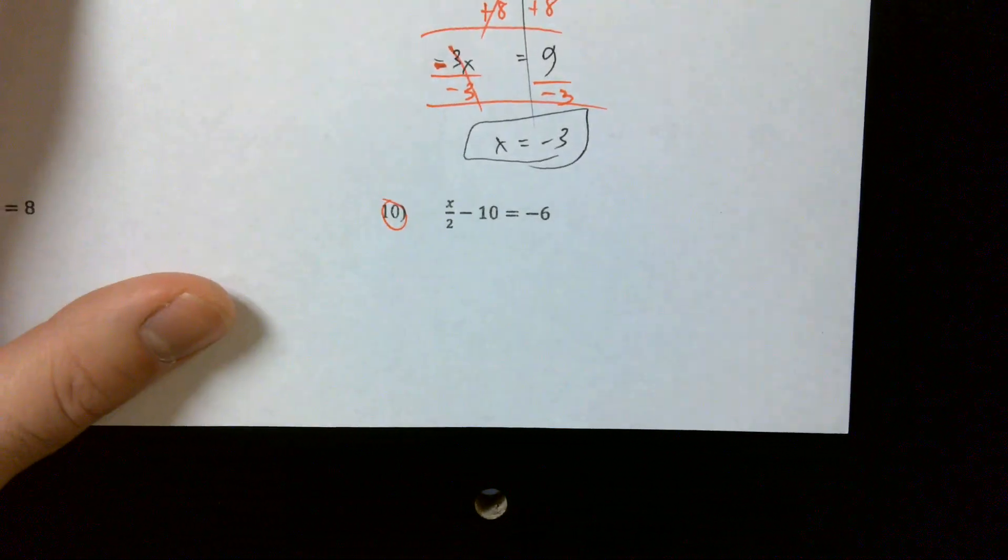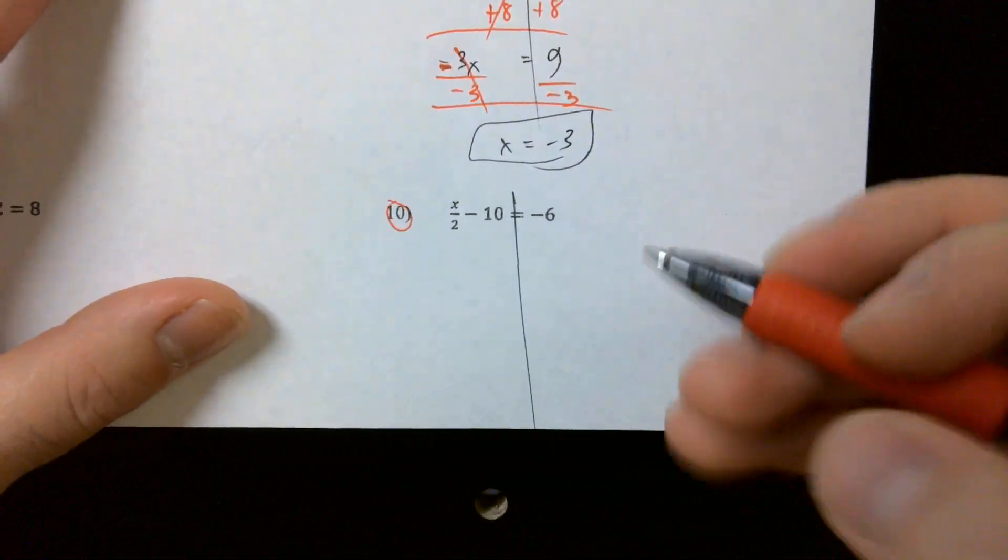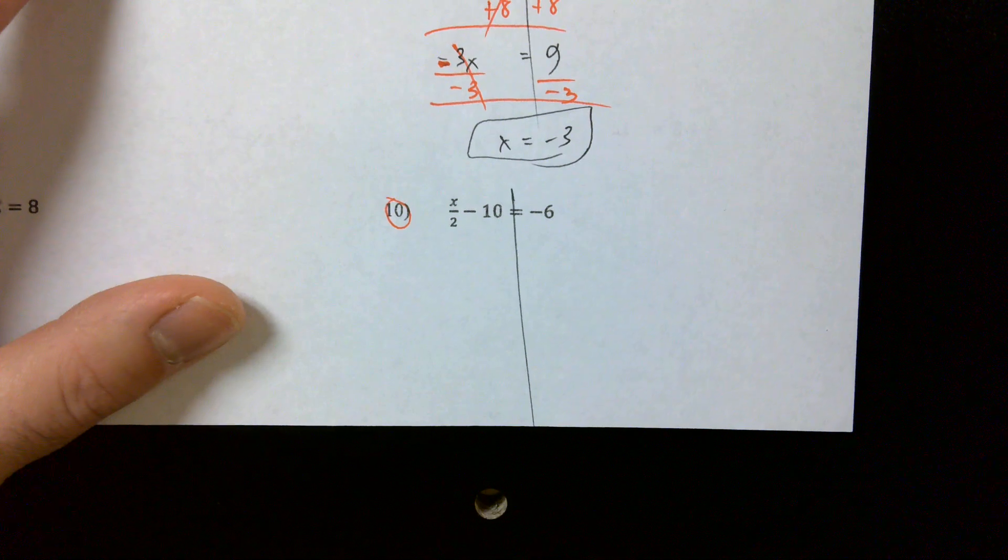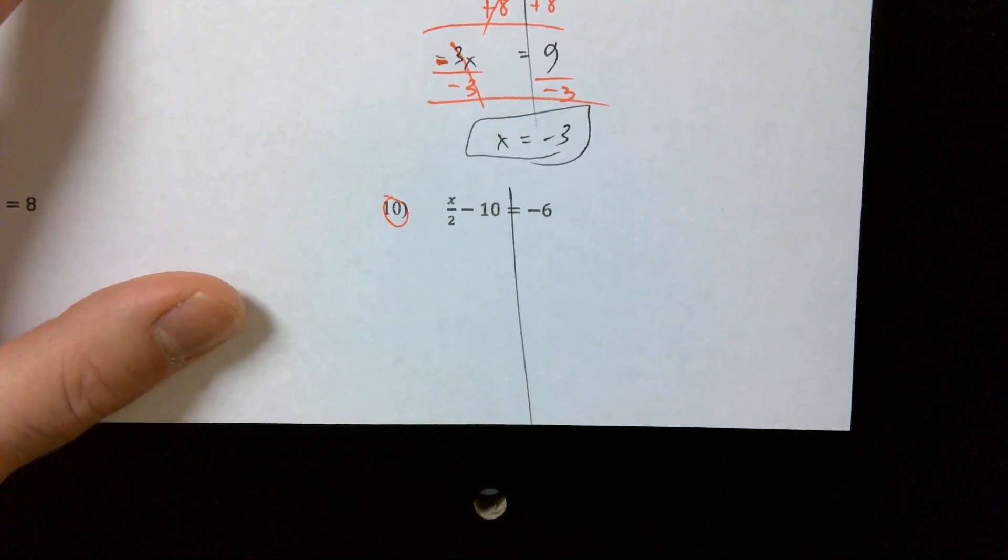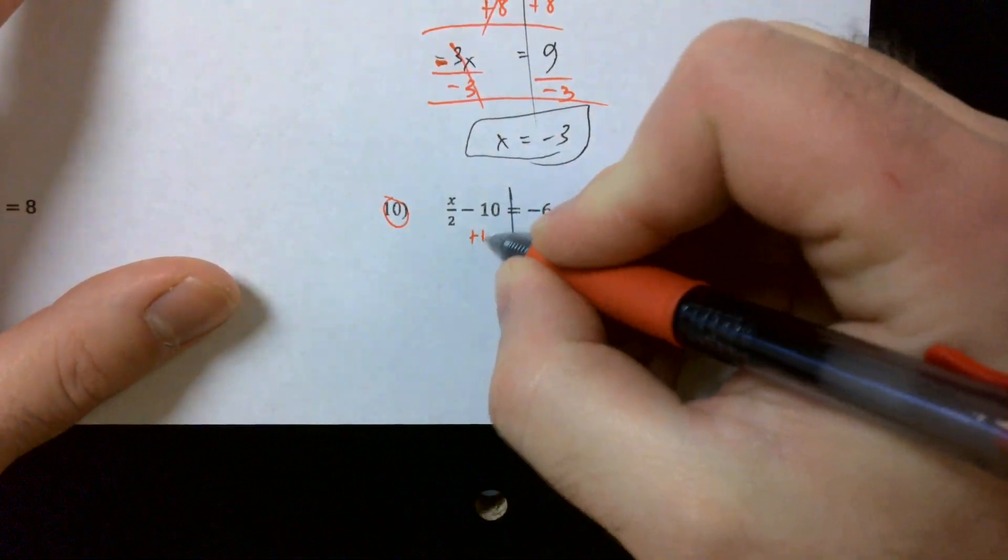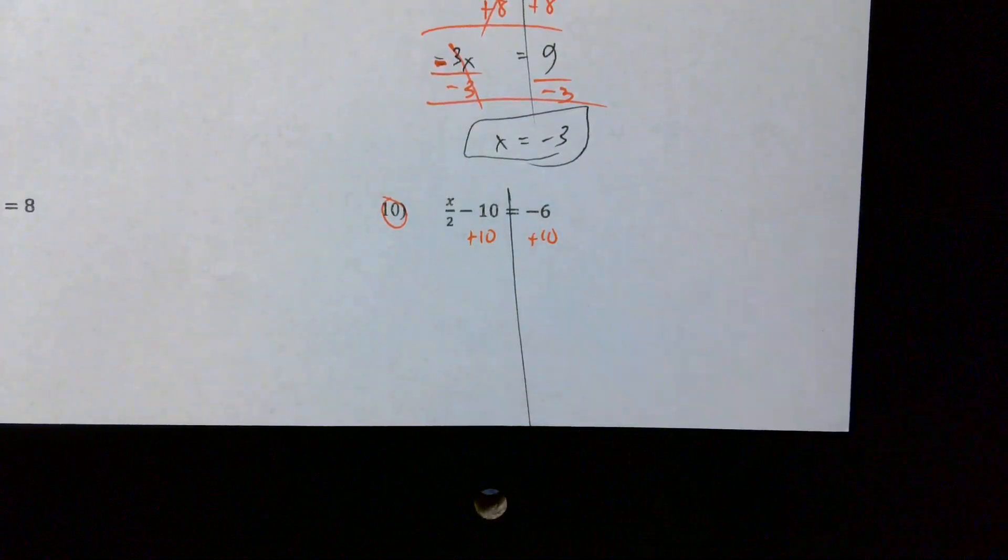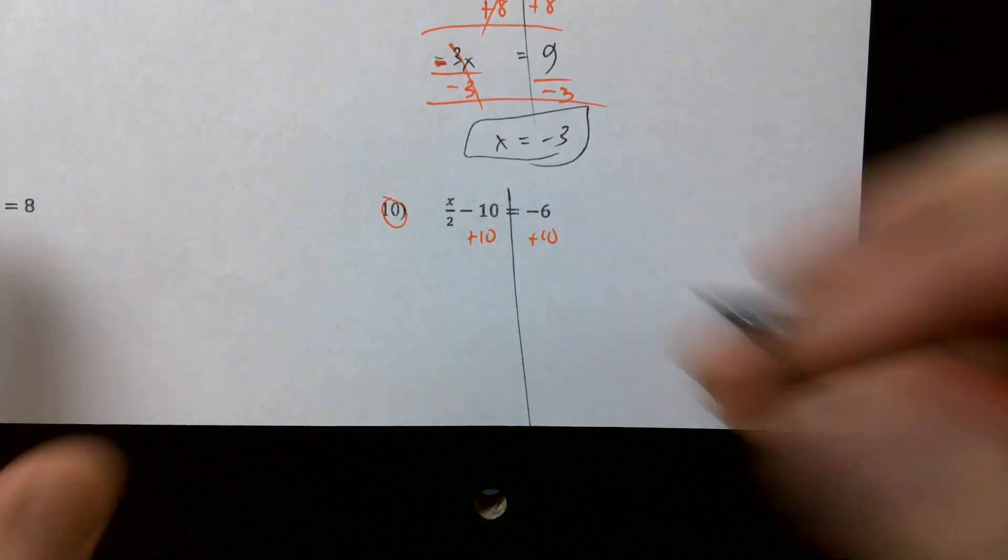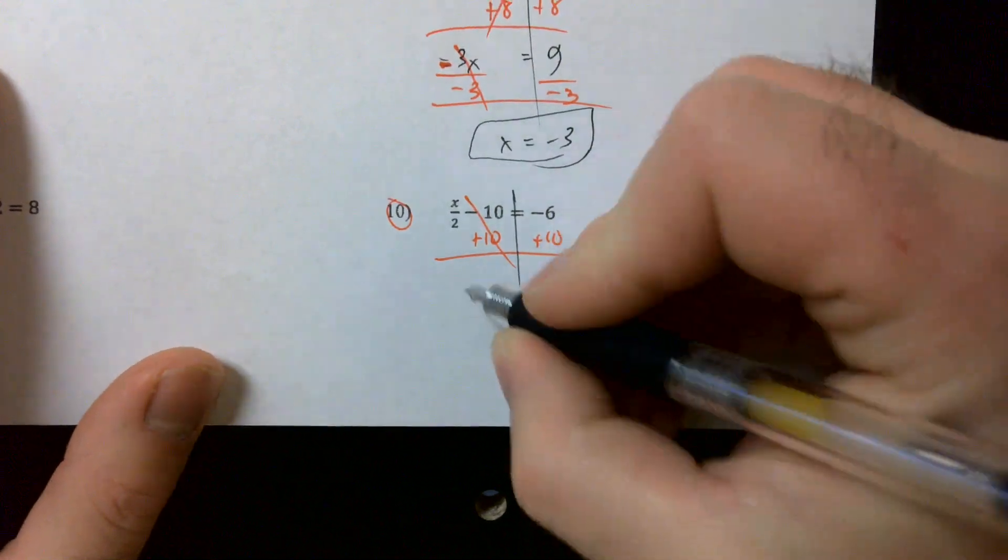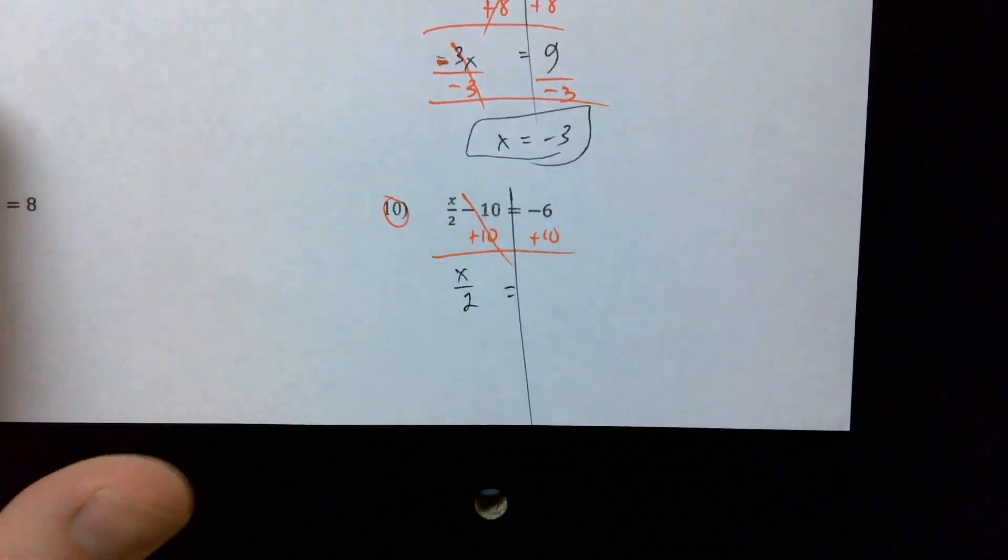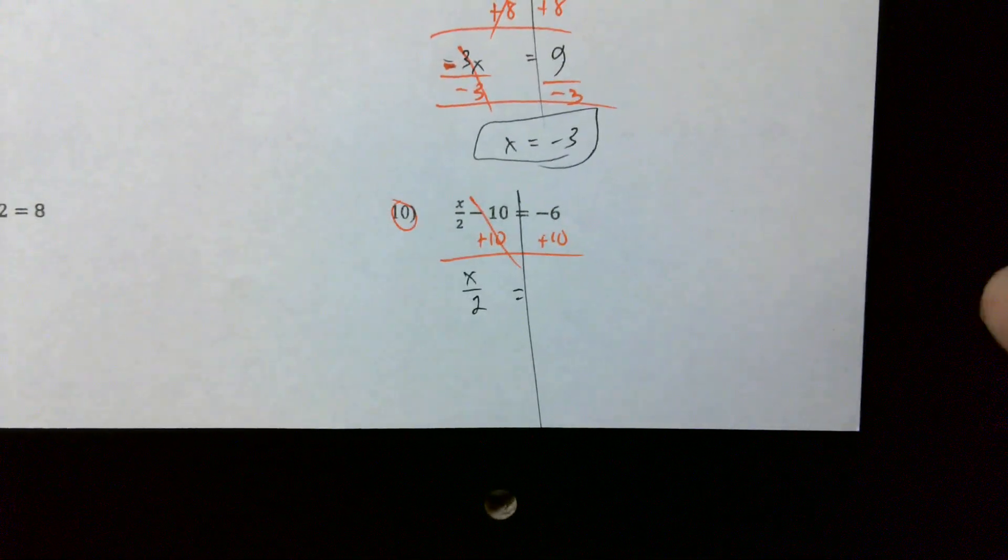Finally, number 10. Split my equal sign. What am I going to do first? Am I going to divide by two, multiply by two? That's right, we're going to get rid of that plus 10 first. Remember it's like reverse PEMDAS, so we want to start with the addition and subtraction and then do the multiplication and division. So x over two is equal to what's negative six plus ten? Positive four.